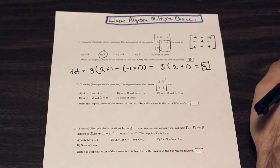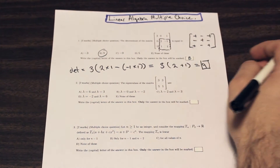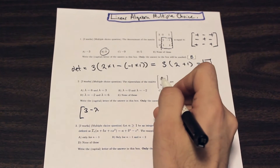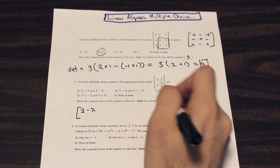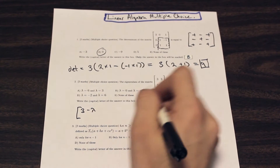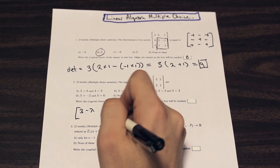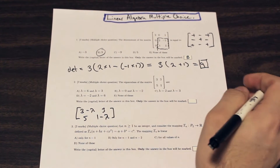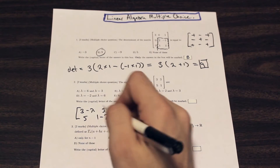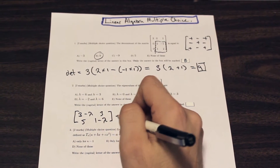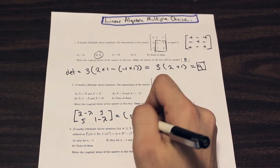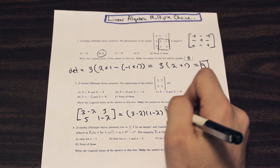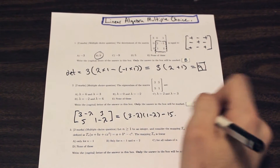Let's move to the second one. The eigenvalues of the matrix — how do we find them? For the main diagonal, we subtract each term by lambda. We keep the off-diagonal terms the same, so we have five and one minus lambda. Then we expand: three minus lambda times one minus lambda, minus three times five, which is fifteen.